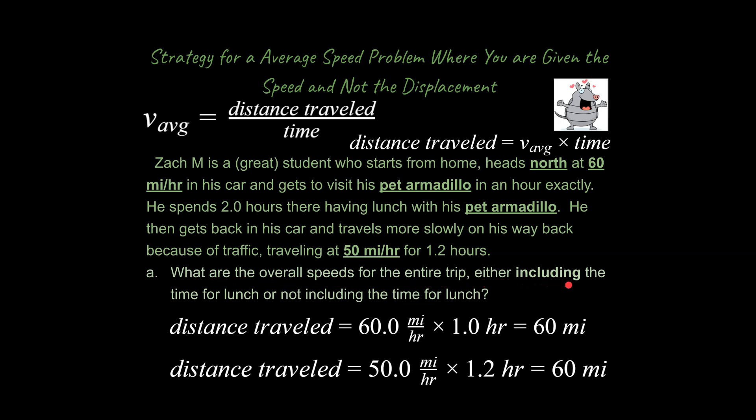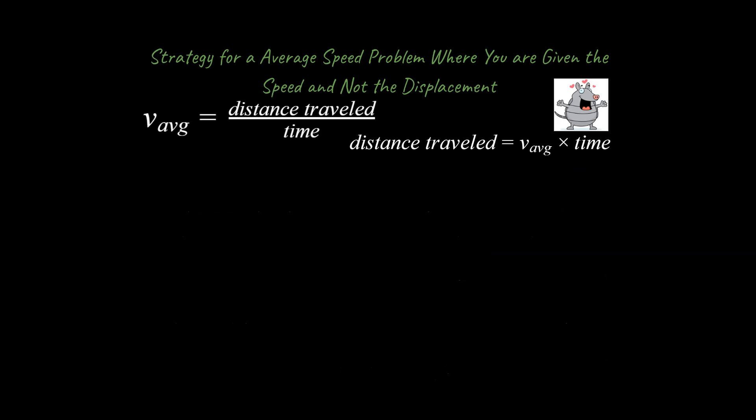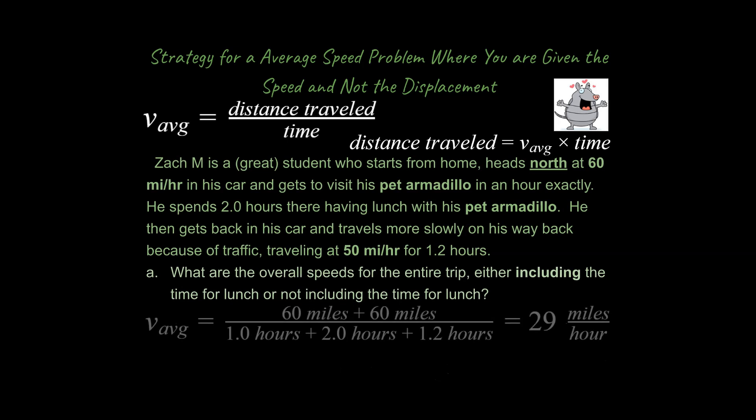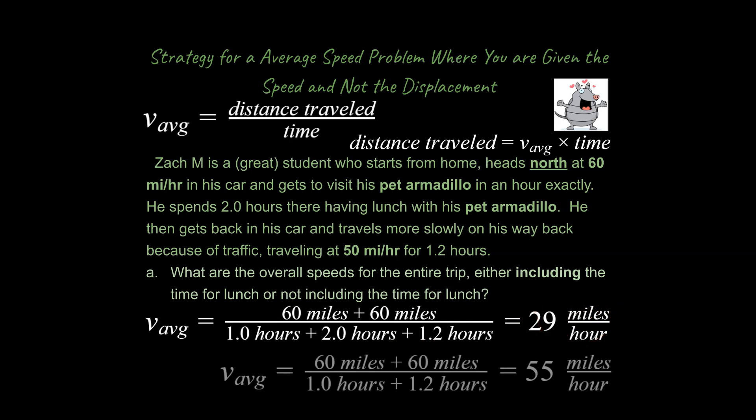And the question is, what are the overall speeds for the entire trip, either including the time for lunch or not? So let's do both just to understand the concept here. Now we have solved for the distance traveled there and back. We can now do the problem in a similar way to what we've done before. So what we're going to say is 60 miles plus 60 miles. So that is going to be our delta x here. And our time, if we're taking into account time for lunch, you've got 1 plus 2 plus 1.2. So that answer is going to be 29 miles an hour. If we were to do the problem without consideration for the time for lunch, you would end up with 55 miles per hour.